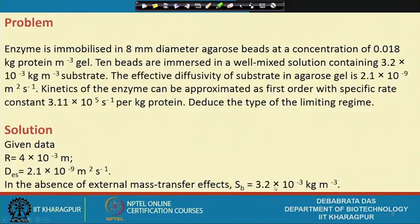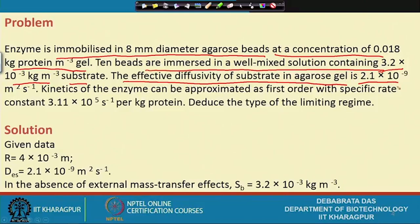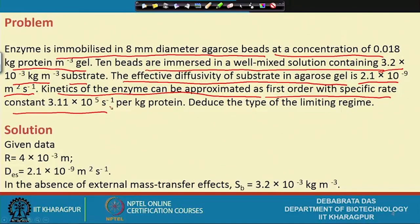The second problem: an enzyme is immobilized in an 8 mm diameter agarose bead at a concentration of 0.018 kg protein per cubic meter of gel. Ten beads are immersed in a well-mixed solution containing 3.2×10⁻³ kg/m³ of substrate. The effective diffusivity of the substrate in agarose gel is 2.8×10⁻⁹ m²/s. The kinetics can be approximated by first order with a specific rate constant of 3.11×10⁵ s⁻¹ per kg protein.